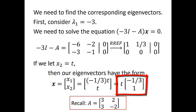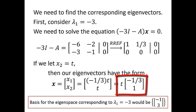We could take as our eigenvector (-1/3, 1) or any scalar multiple of that vector. The basis for the eigenspace corresponding to eigenvalue -3 would be any scalar multiple of (-1/3, 1). For example, we could take the vector (-1, 3). The eigenspace corresponding to eigenvalue -3 has dimension 1, since there is only one vector in that basis.